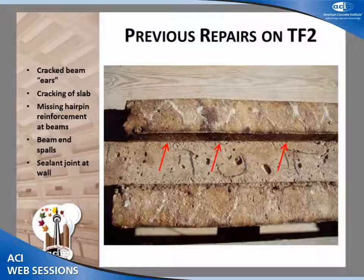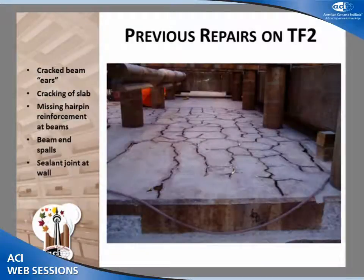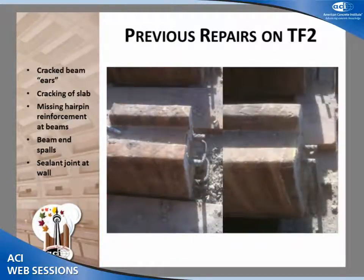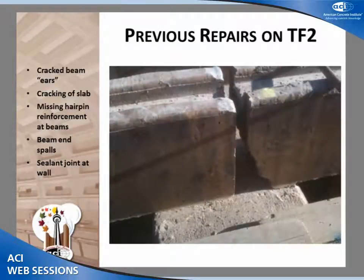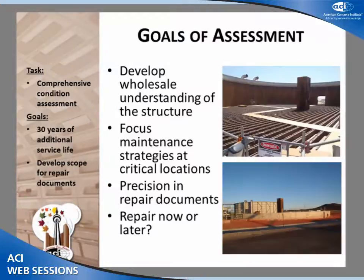They had done previous repairs to one of the adjacent trickling filters. At this water treatment facility there are six trickling filters. We were involved during construction observation for one of the adjacent filters, so we had some idea of what type of distress to anticipate. They had longitudinal cracking along the beam ears from differential shrinkage, cracking of the slab, some beams missing hairpin reinforcement at the ends near expansion joints, spalling at the beam ends, and a sealant joint around the interior wall in bad shape.